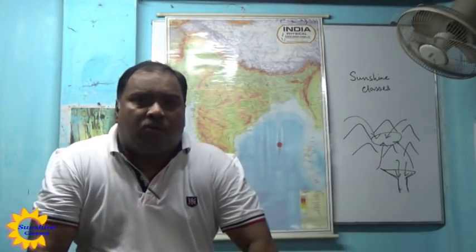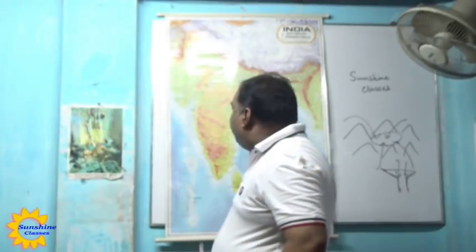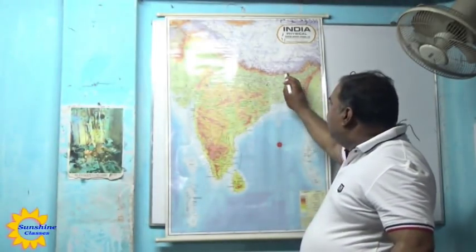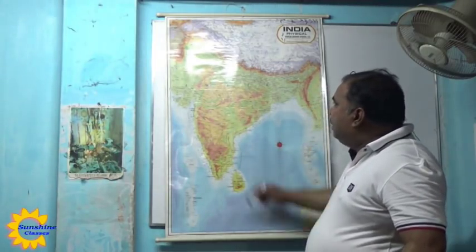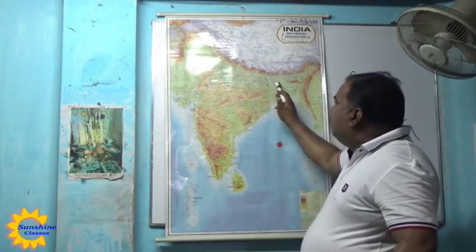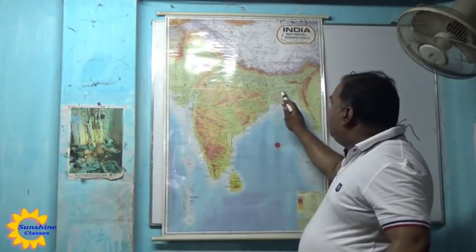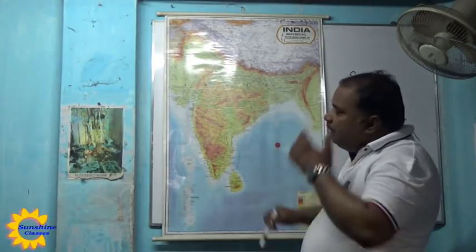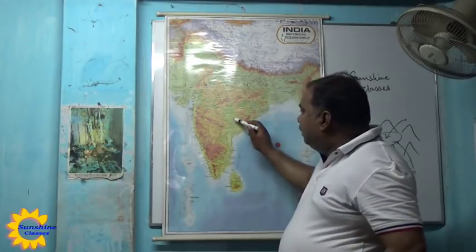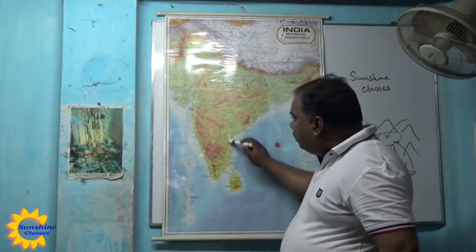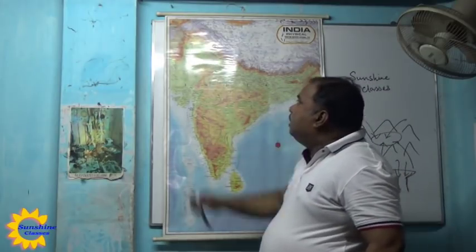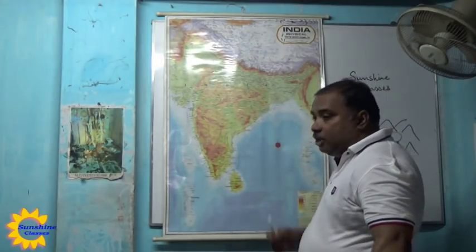The southwest monsoon causes huge rainfall in India. Maximum rainfall occurs in the northeast part of India — especially Meghalaya — and along the west coast of India. The second highest rainfall is in the northern plains of India including West Bengal and Tripura. Least rainfall is found on the eastern side of the Western Ghats and in the mountainous ranges of Jammu and Kashmir.